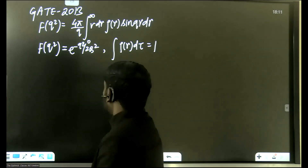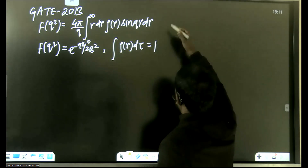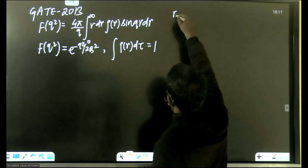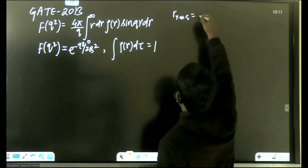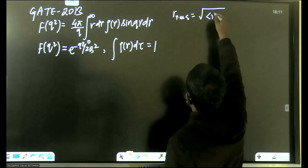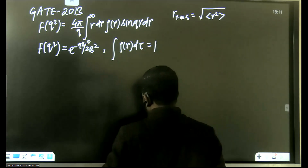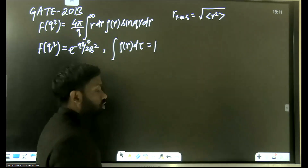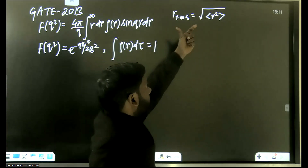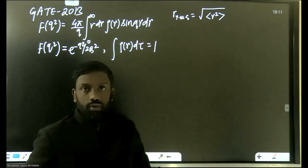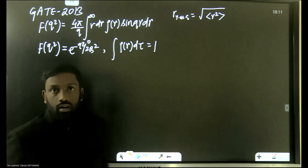The root mean square radius is defined as the square root of the mean value of the square of the radius. So we will first calculate the mean of r², and then take the square root.